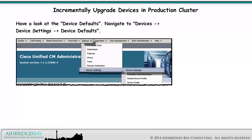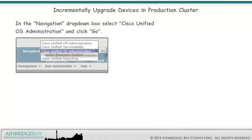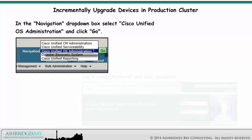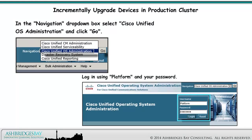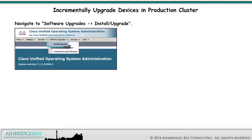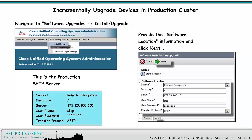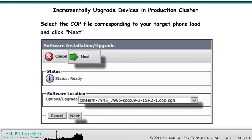Have a look at the device defaults. Navigate to Devices, Device Settings, Device Defaults. This is the phone load before the upgrade. In the Navigation drop-down box, select Cisco Unified OS Administration and click Go. Log in using Platform and your password. Navigate to Software Upgrades, Install/Upgrade. Provide the software location information and click Next — use the Builds Jump Server SFTP Server. Select the COP file corresponding to your target phone load and click Next.